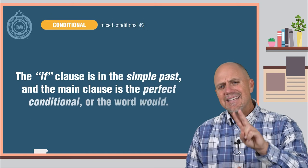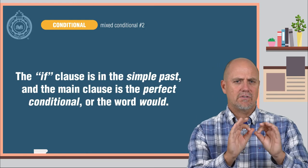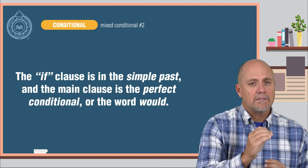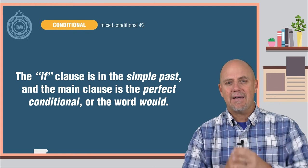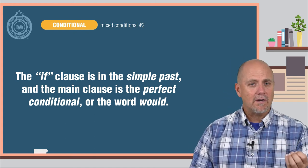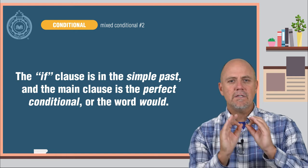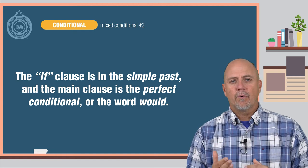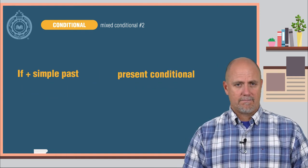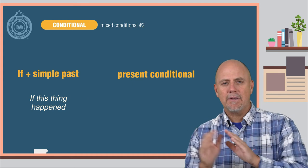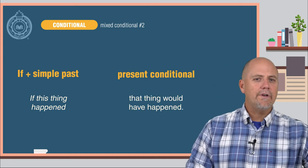In this second type of mixed conditional sentence, the if clause is in the simple past, and the main clause is in the perfect conditional, or the word would. If this thing happened, that thing would have happened.